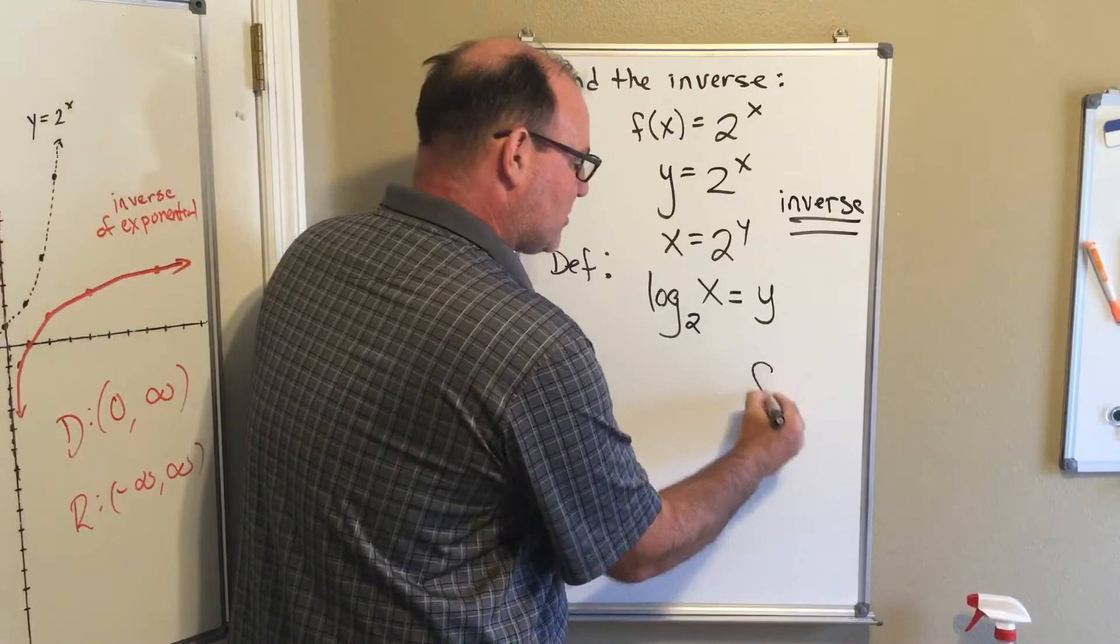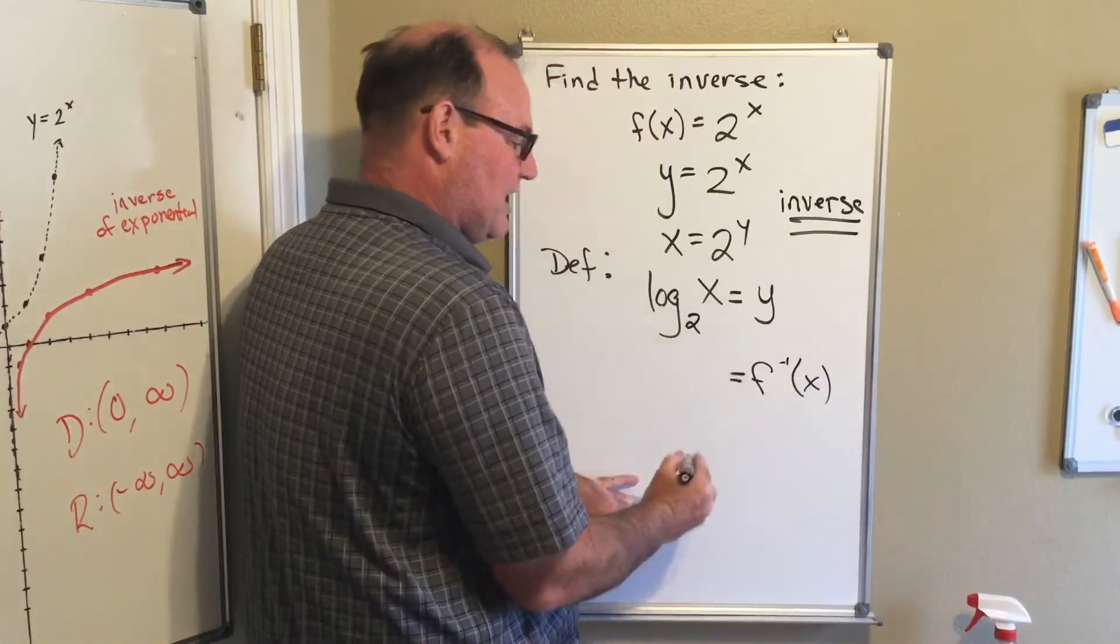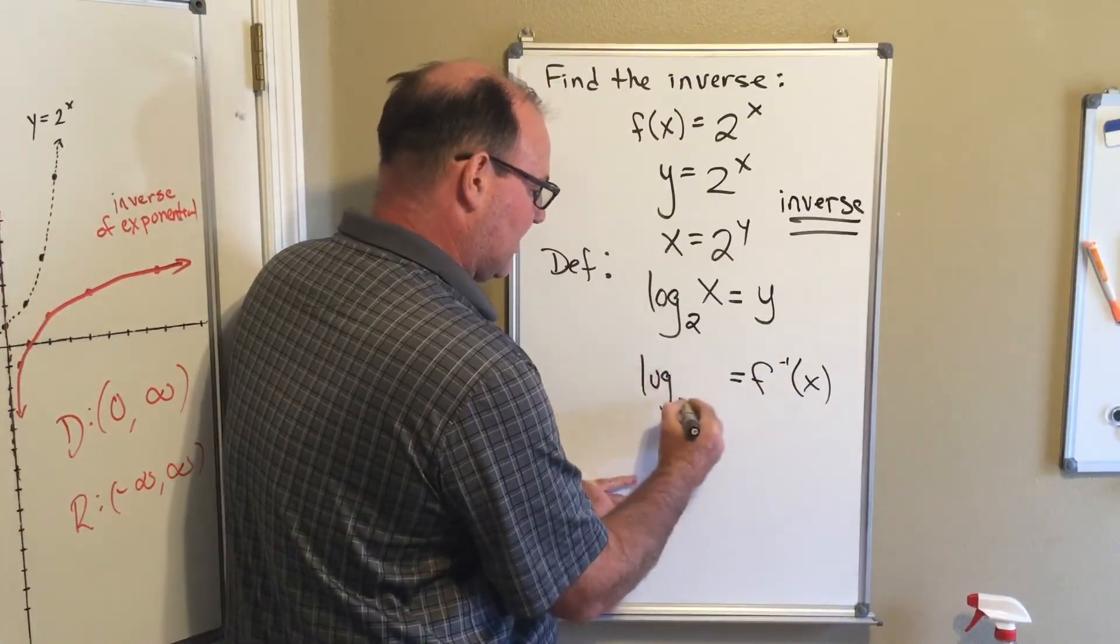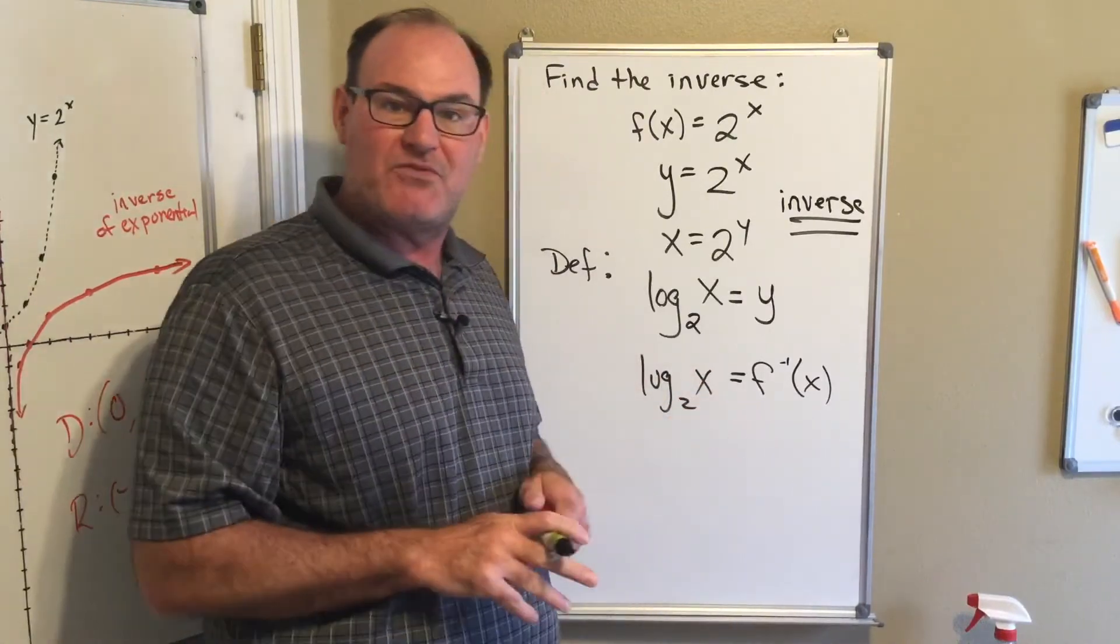The last step to finding the inverse is notational. So the inverse is log base 2 of x. We have found the inverse. This leads to the big definition.